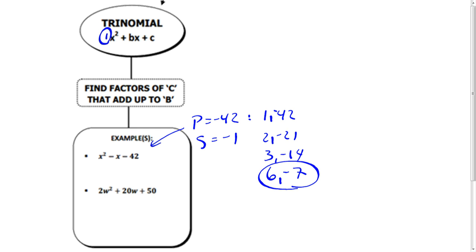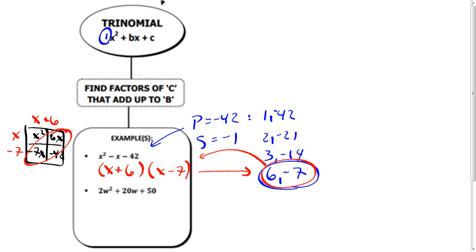If you were to do the box here or factoring by grouping, notice I would have x squared. The negative x gets split up into 6x and negative 7x. When I factor out my greatest common factors, those are the same numbers that I split the term into. The shortcut here is that if you have a leading coefficient of 1, whatever you find as your factors are just going to turn into those.